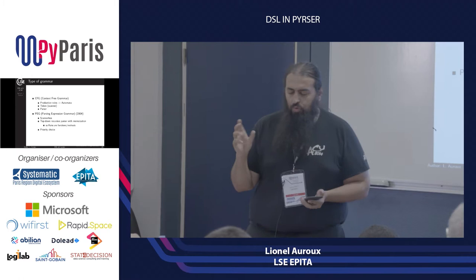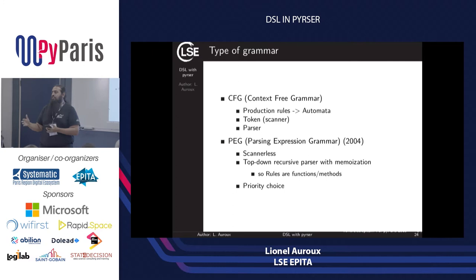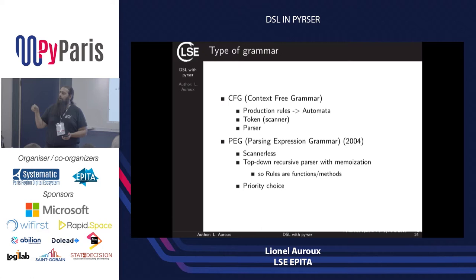In PEG, you have priority choice: in classical CFG parsers all alternatives can be taken, but in PEG each alternative is tested in order. If you fail on a rule, you can backtrack and retest a subset of your input. There is a wide range of tools for all this. For CFG in Python you have PLY — Python Lex and Yacc — and LR parsing tools. For Parsing Expression Grammar tools, you have Arpeggio, Parsimoni, Tatsu, and Pyrser.